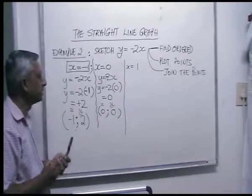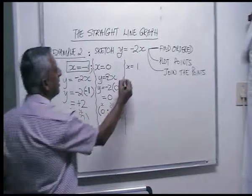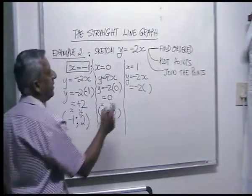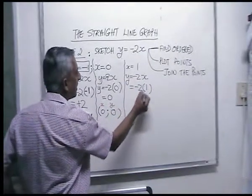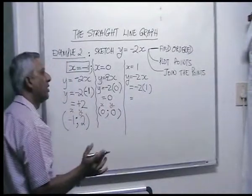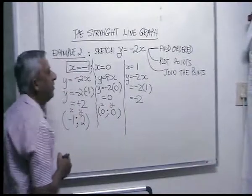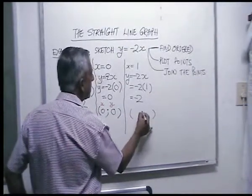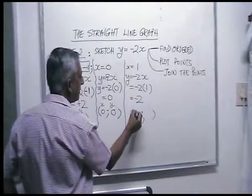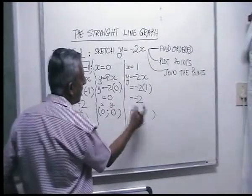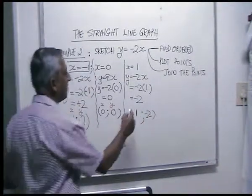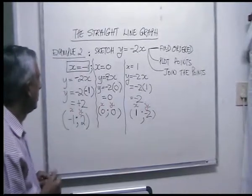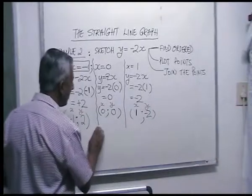Write your equation down again — it's always nice to do your work step by step. Minus two times one is minus two, if you know your integer rules. So your ordered pair here is x is one and y is minus two. Now sometimes some teachers will ask you to build a table of ordered pairs.